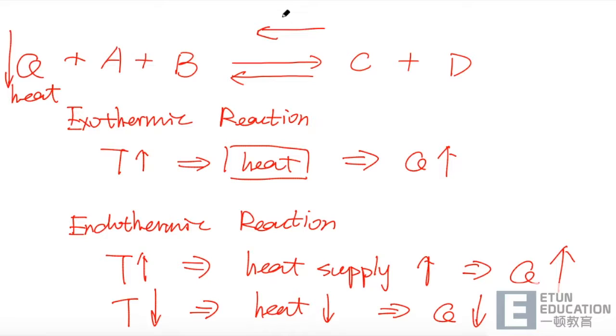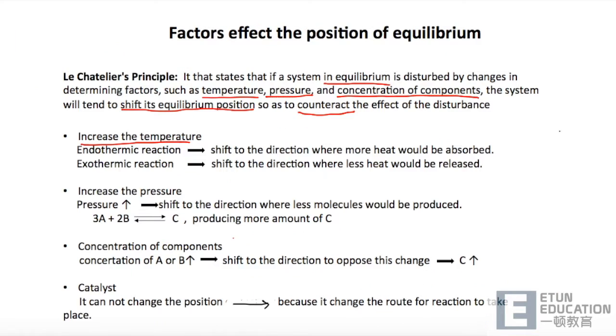所以,这就是 Le Chatelier's Principle 想要叙述的一个过程。好,我们再看一下 increase the pressure. Increase the pressure 我们怎么样理解呢?当我们的 pressure 增加的话,其实是什么?我可以想象成我们这个 volume 里面的体积在被一步步的压缩。那这样子原子之间它们的距离就会减小。所以,原子想着我要 freedom,我要自由。